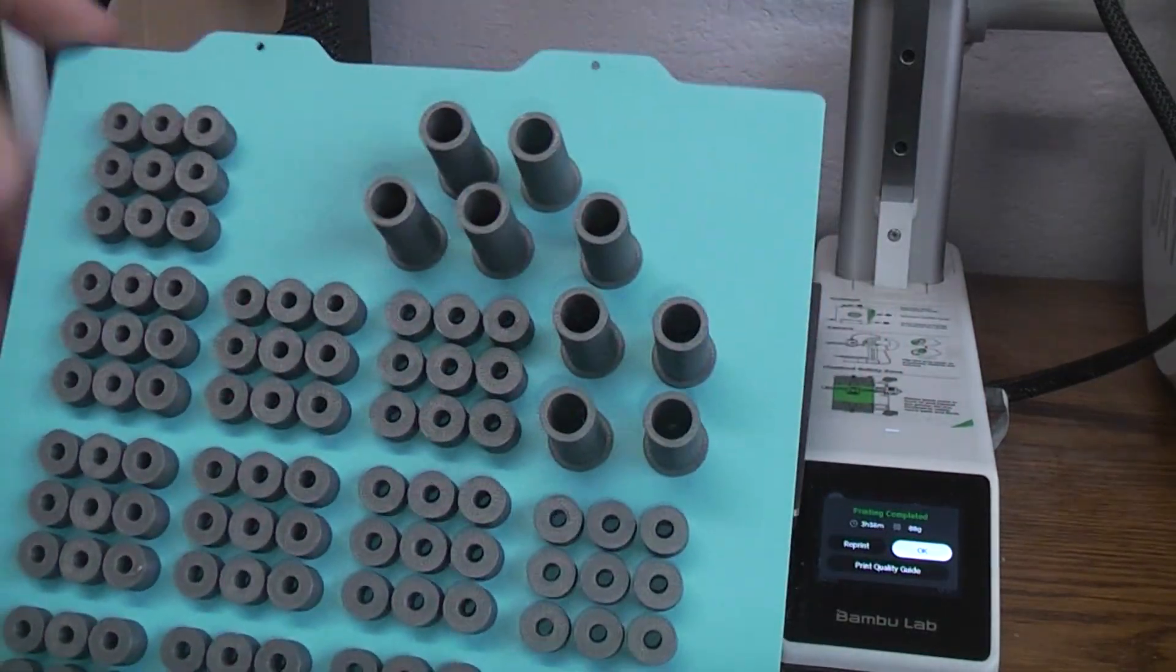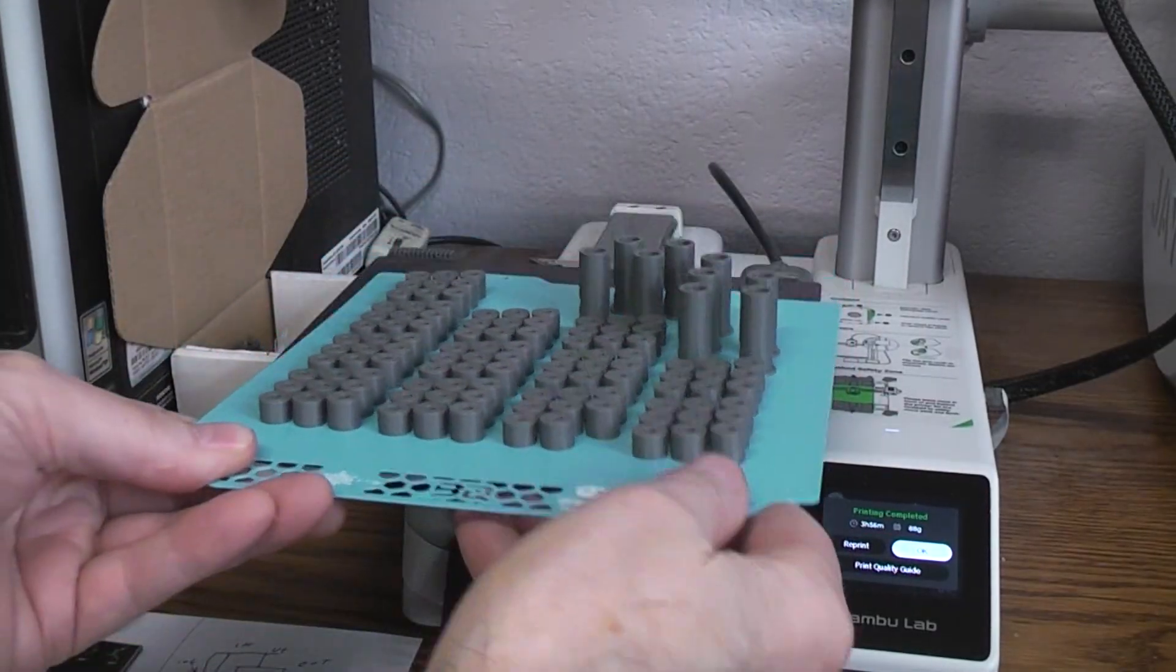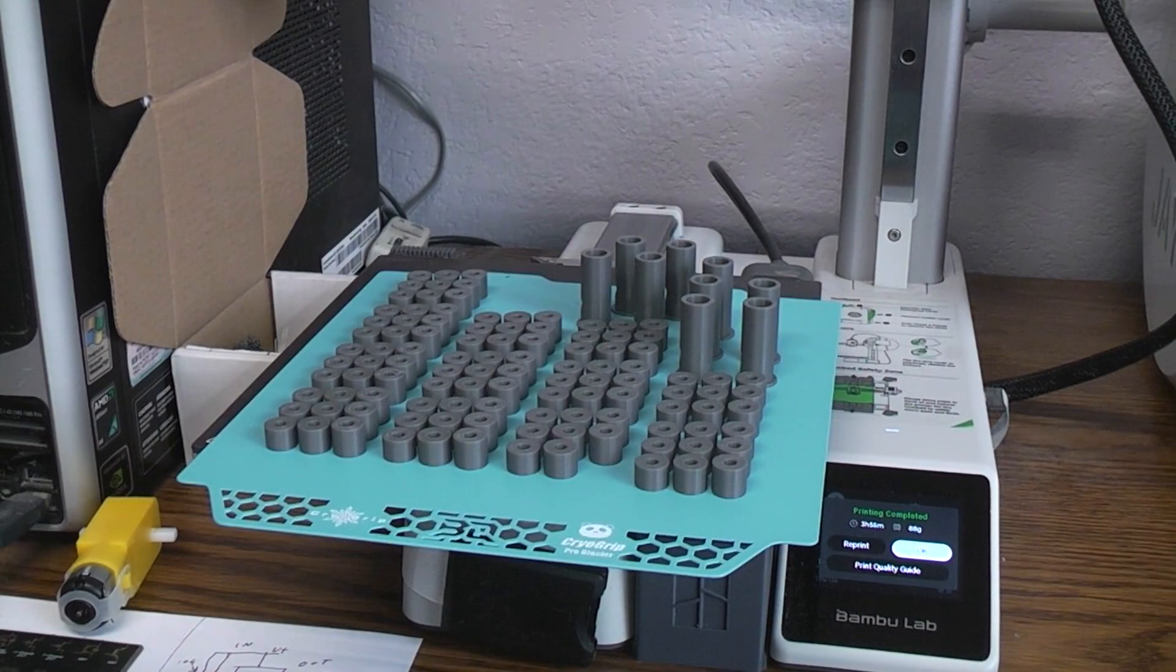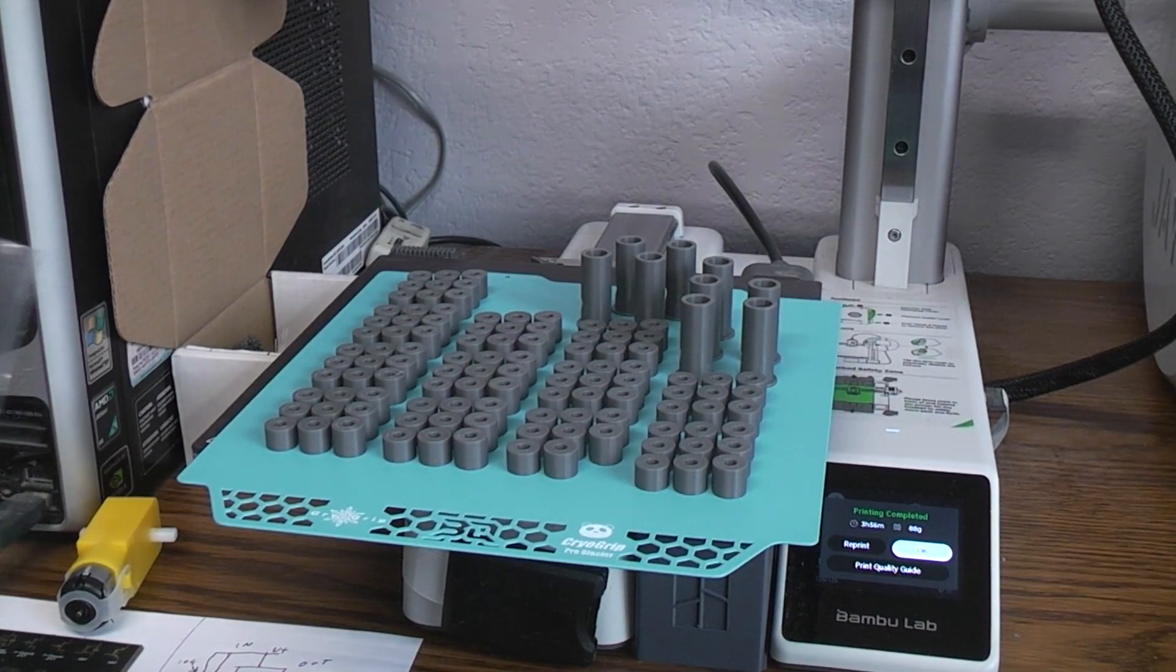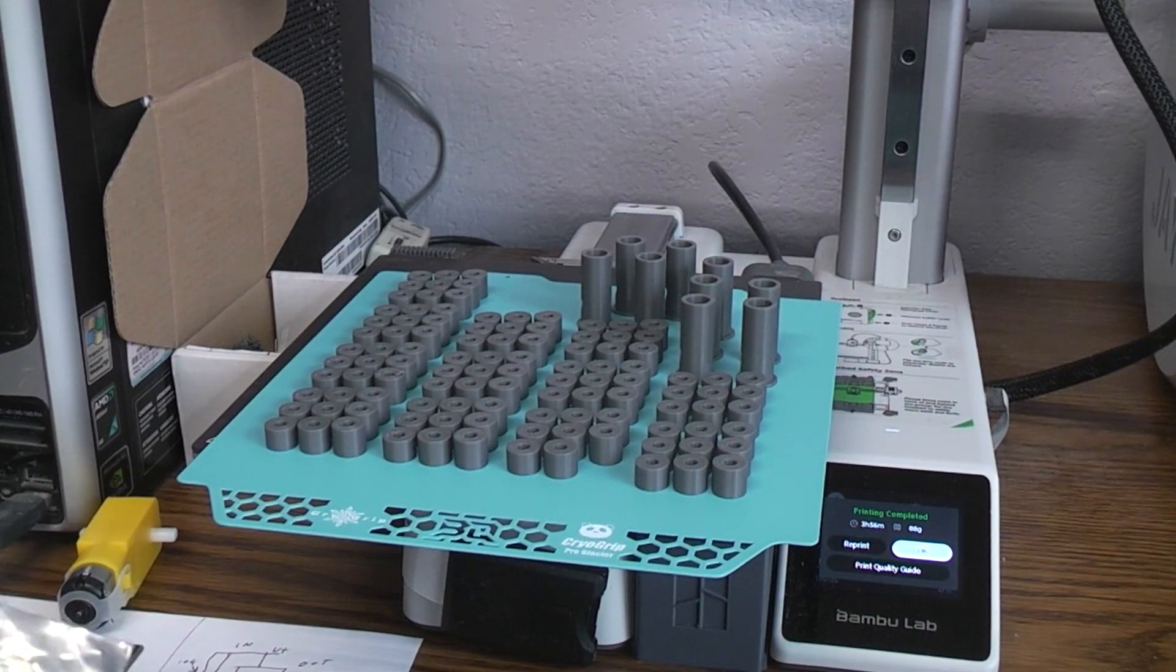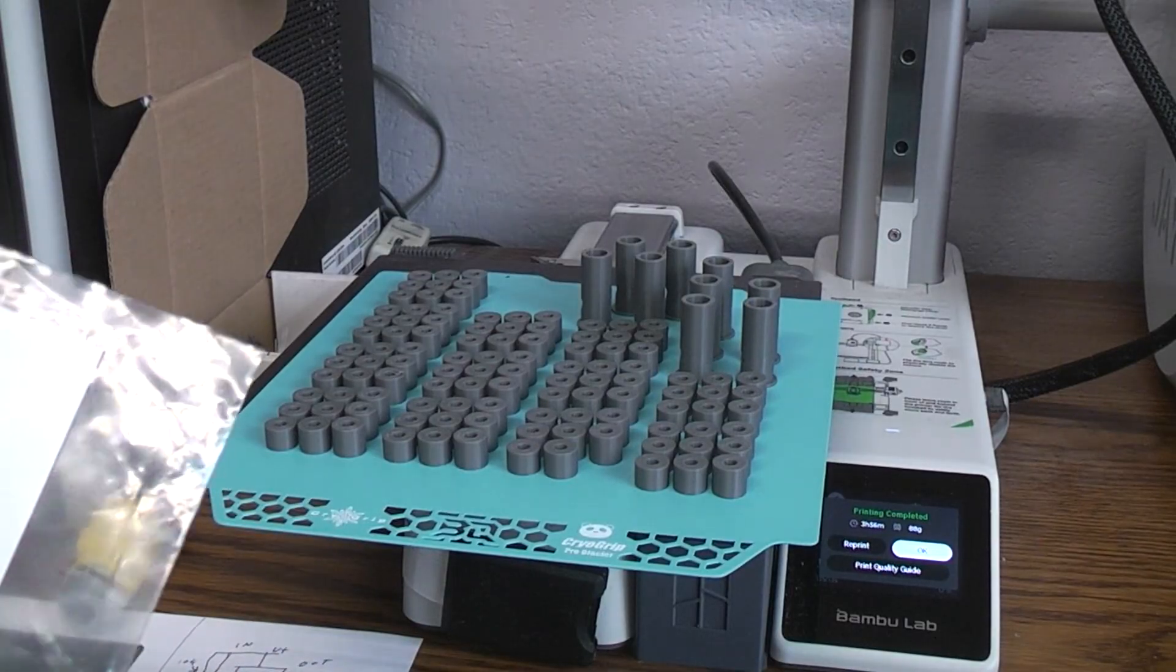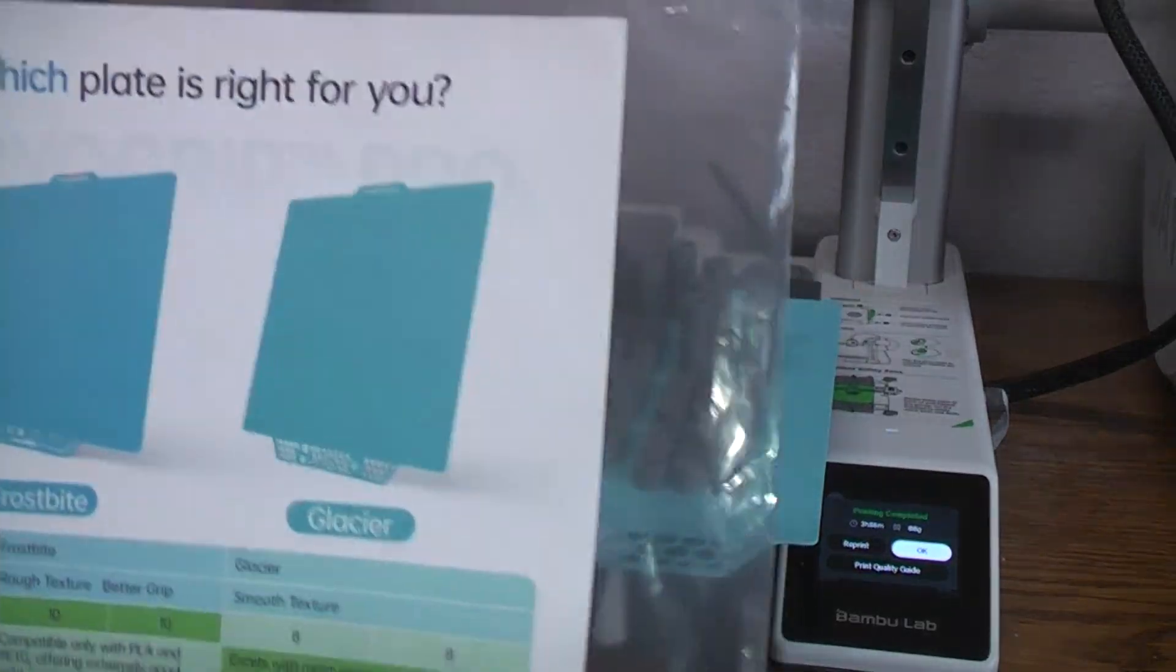It was a 100% success. I guess I recommend the Cryo Grip. If you're only printing PLA, then I would recommend the Frostbite. But if you're printing all different types of filaments and you want a very minimal amount of texture on the bed side of the part, then I would say go with the Glacier.